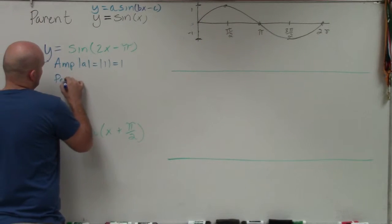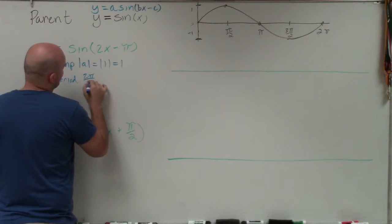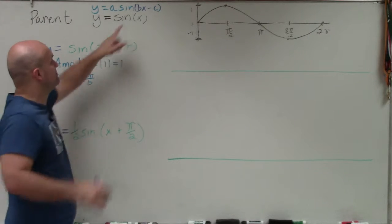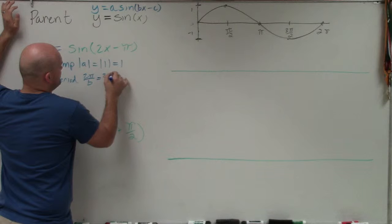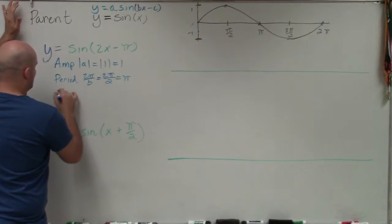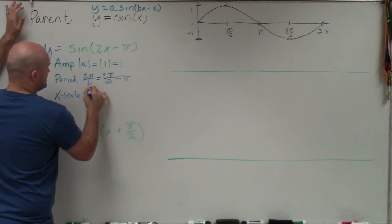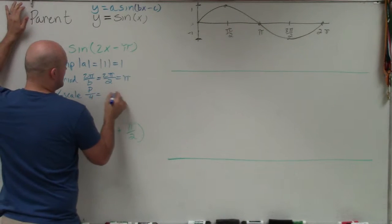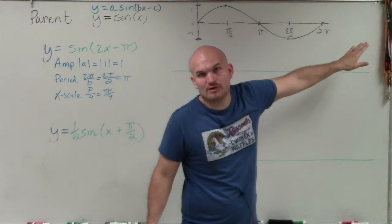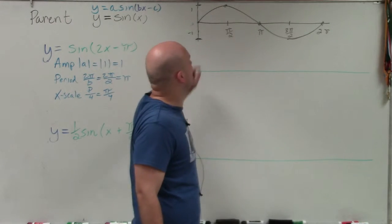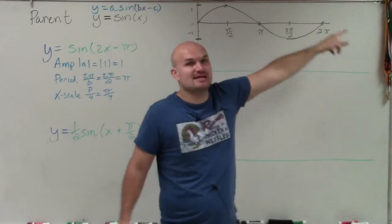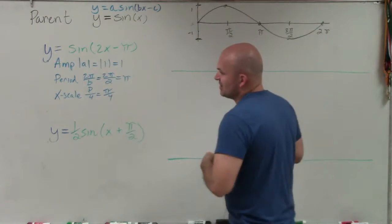To identify my period, that's going to be 2π divided by b. In this case, my b is going to be 2, because b is what is being multiplied by your x. So I have 2π divided by 2, which is just going to be π. The next one is going to be my x scale, which is simply my period divided by 4, which in this case is π divided by 4. Remember, the period is how long it takes the graph to complete one revolution, and the x scale is the distance between each of the five critical points within a period.